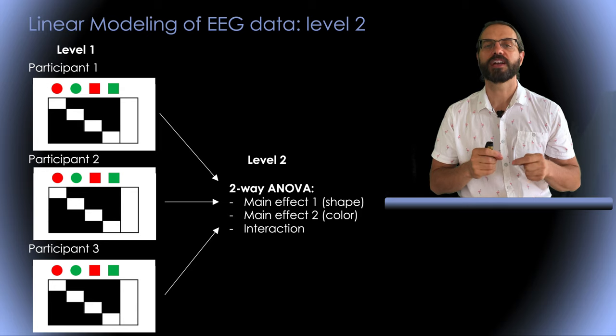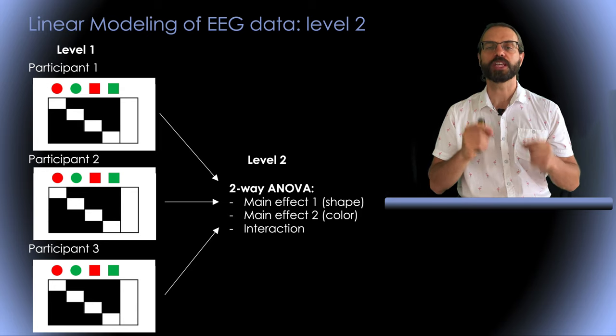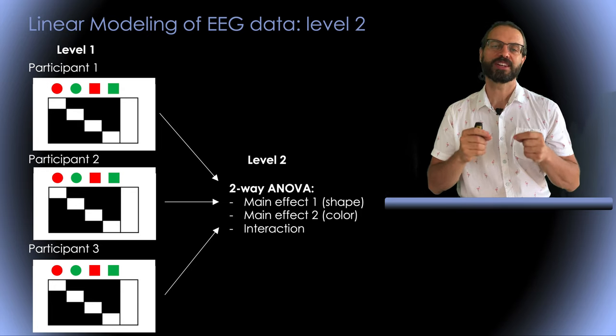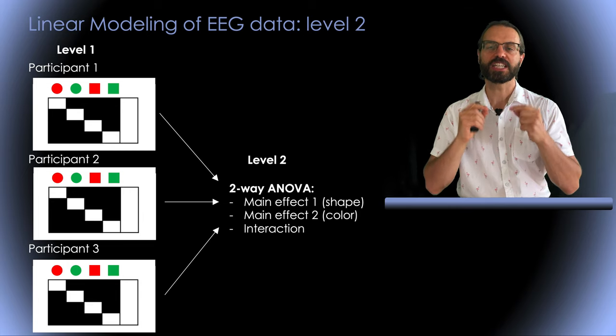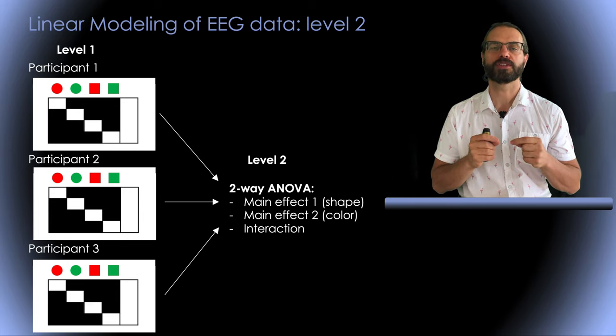This is why you do not need to compute interactions at the first level. Instead, you do it at the second level, as you would have done with ERP. Again, this must be done at each latency for each electrode, so we will need to correct for multiple comparisons.